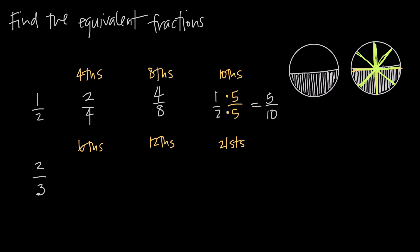Let's practice with a different fraction. Starting with two over three, instead of expressing it in thirds, I want to express it with a denominator of six. Two thirds equals what over six? Three times two gives me six, so I multiply by two over two. Two times two is four in the numerator, and three times two gives me six in the denominator. So four over six is equal to two over three.